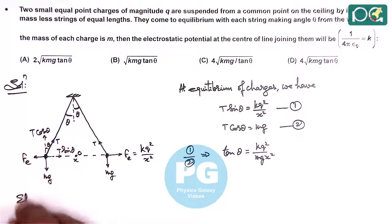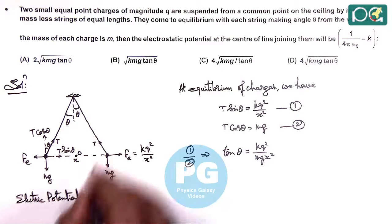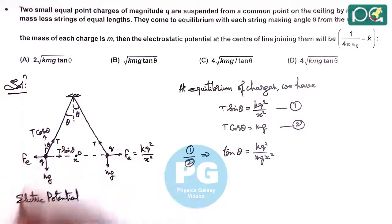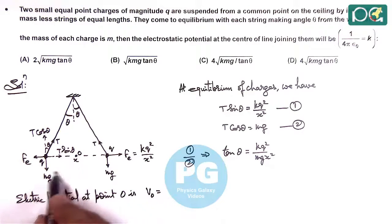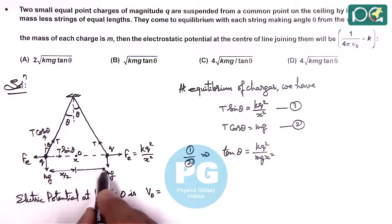As the two charges each have magnitude Q, the electric potential at point O is V₀. The distance of point O from the two charges is x/2 and x/2.